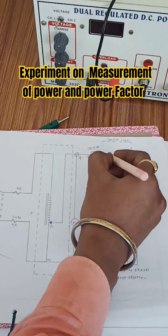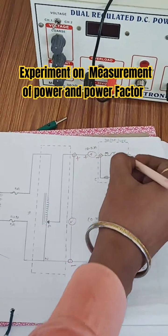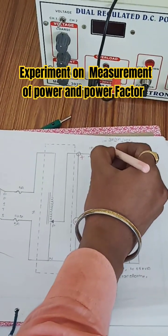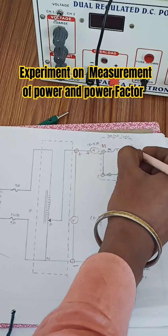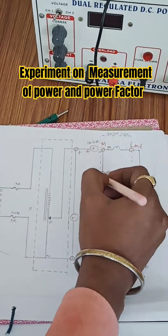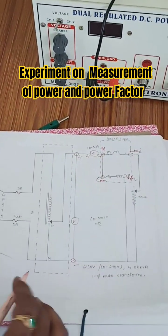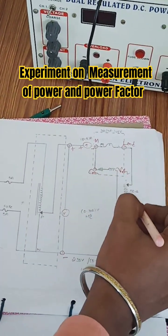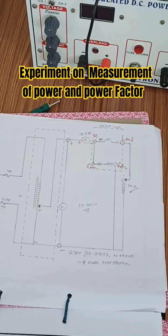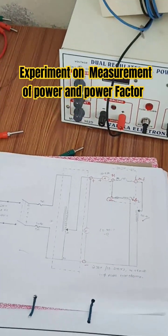The terminals for the wattmeter are: M is main, L is load, C is common, and V is voltage. This is the circuit diagram and we are going to close it through a wire wound rheostat. Now let us give the connections.